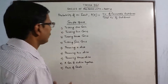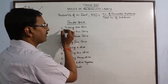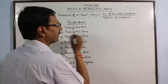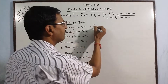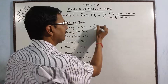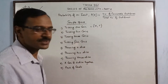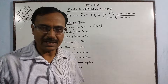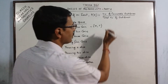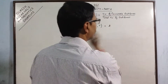Now say we have the tossing of one coin. When we toss one coin we have only two possible outcomes, that is head or tail. So the number of possible outcomes is 2.